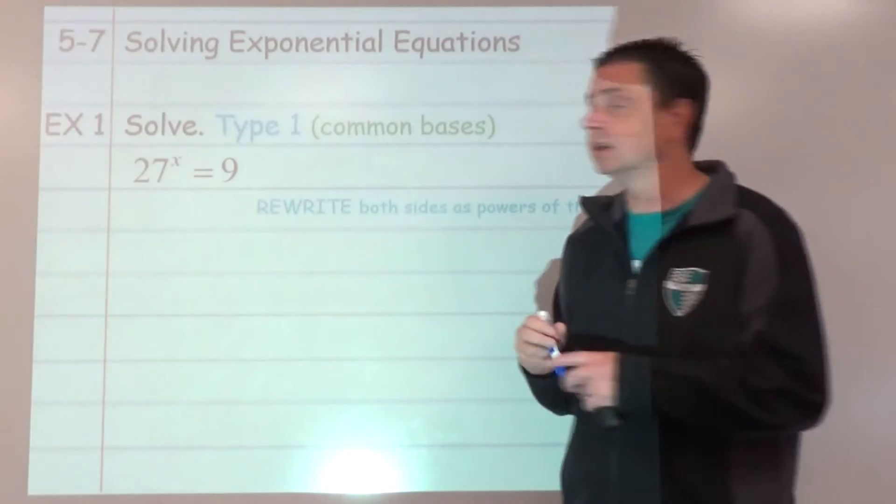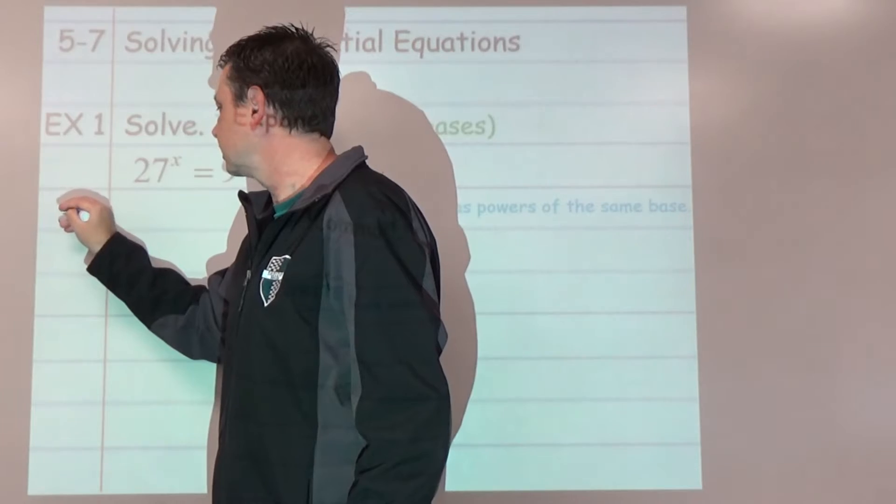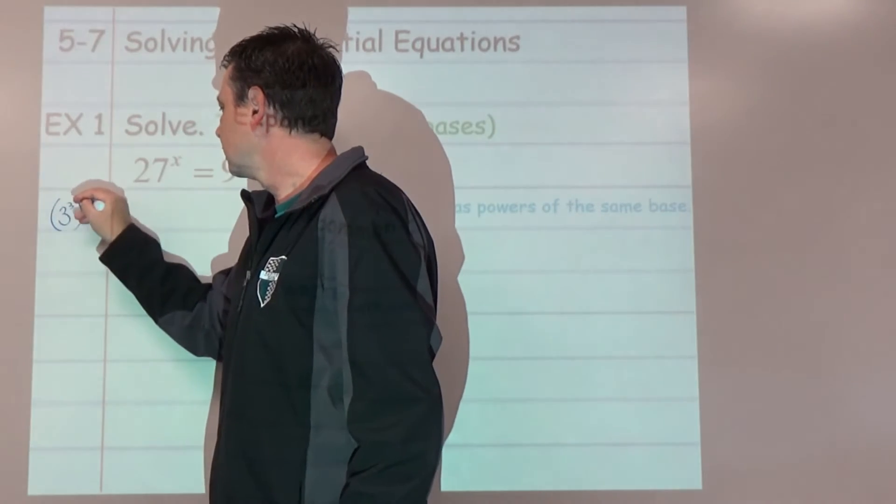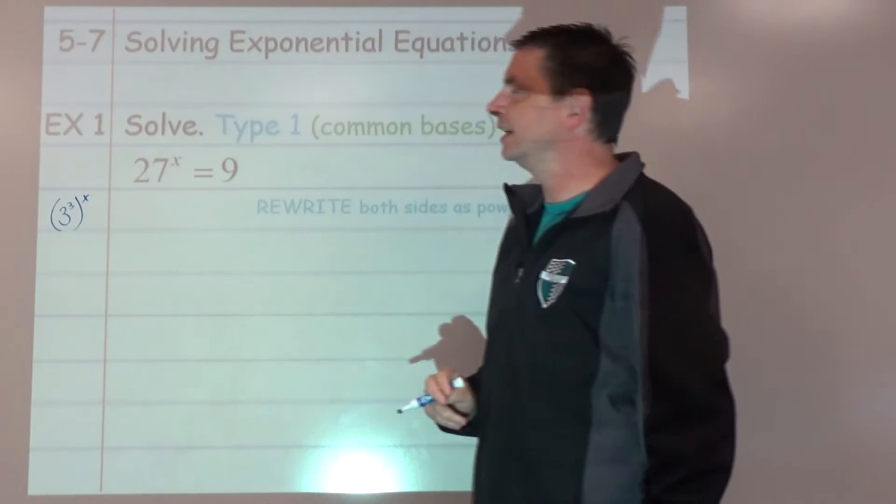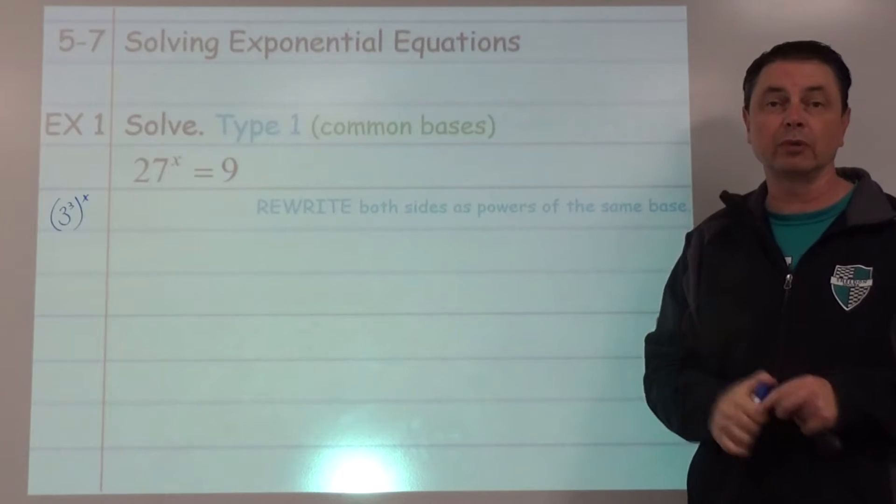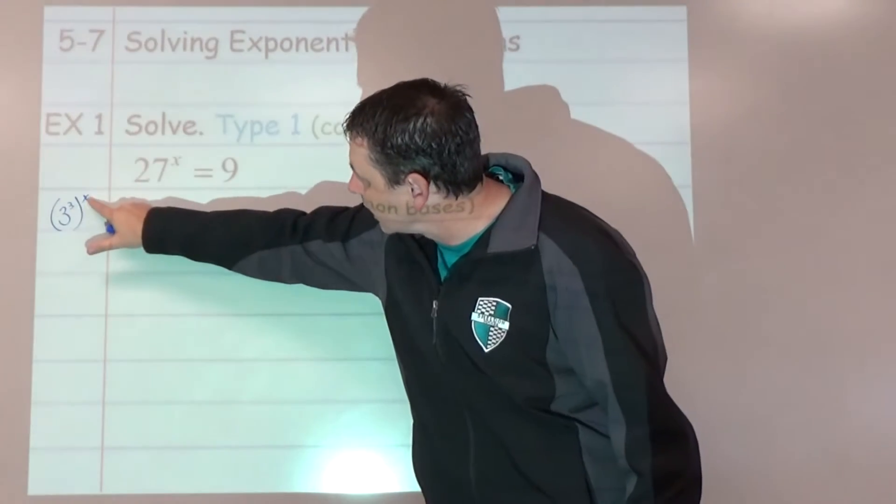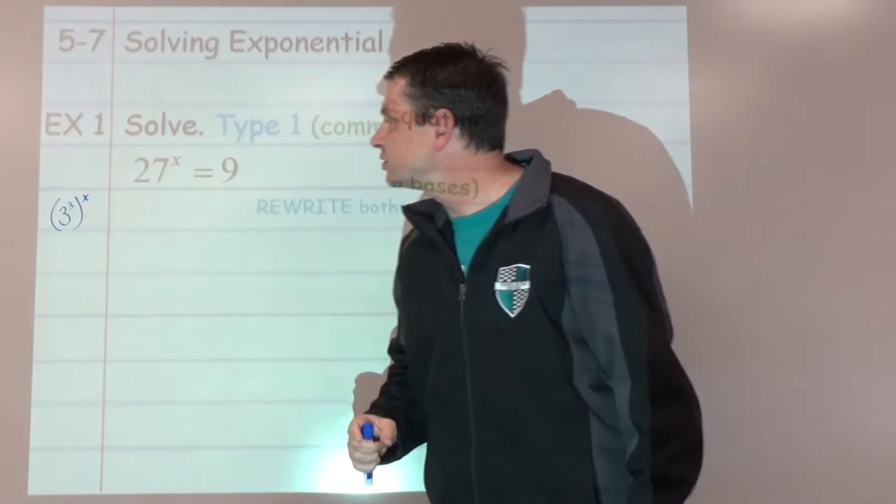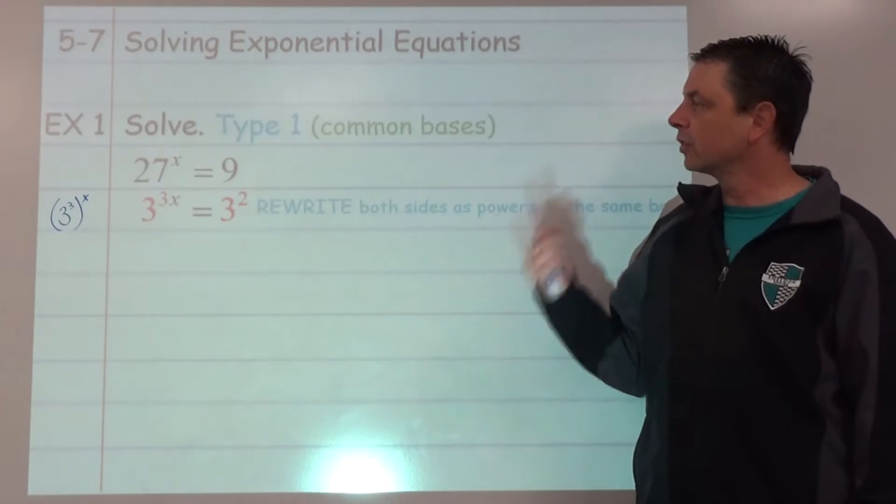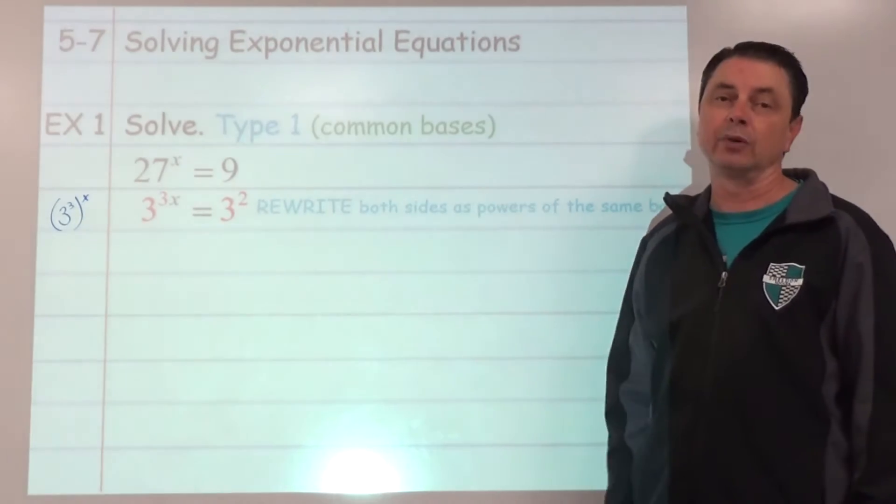Now the tricky part is on the left. When 27 is 3 to the third power, that gets raised to the power of x. In a previous lesson, we learned that when we raise a power to a power, we multiply those exponents. So it becomes 3 to the 3x equals 3 to the second power.